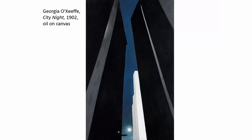O'Keeffe is very well known for her flower paintings, which look like vaginas or female genitalia. But she always said this was not the case and wanted people not to interpret her paintings in a Freudian fashion. Around 1920 she moved into a more representational way of painting — her earlier work was more abstract — and she also painted New Mexico landscapes and skulls and flowers.